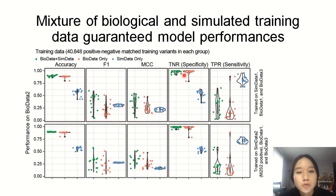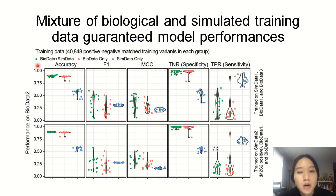This plot demonstrated that the model trained on only simulated data performed the worst in terms of accuracy, F1 score, MCC score, and specificity. However, the mixture data shown in the green dots can train a model that performs as well as, if not even better than, models trained on 100% biological variants.